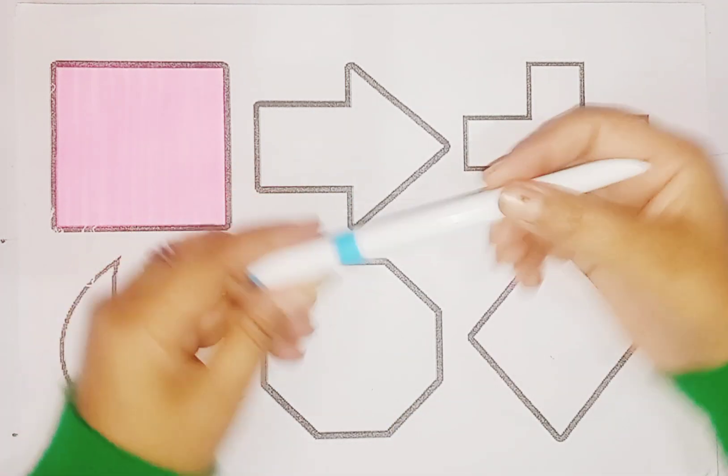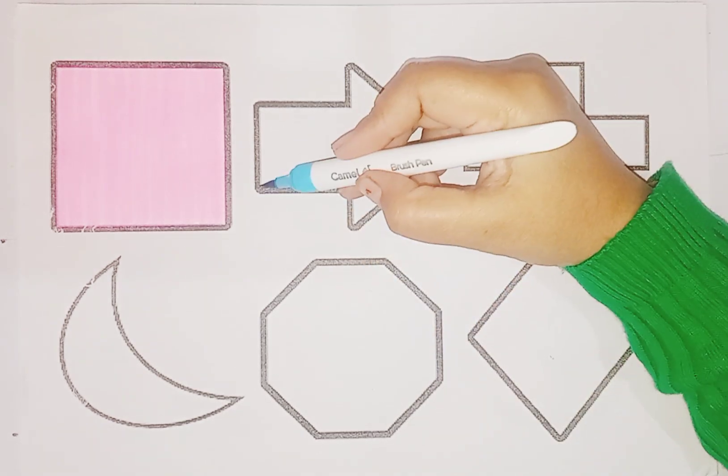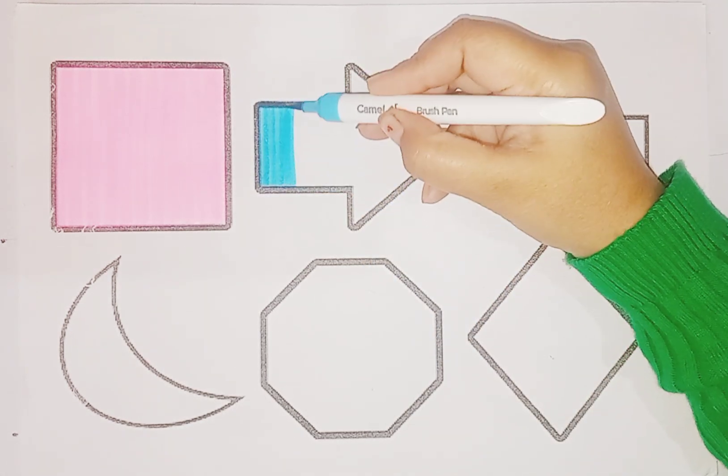Next is sky blue and the shape is arrow. Which shape kids? This is arrow shape.